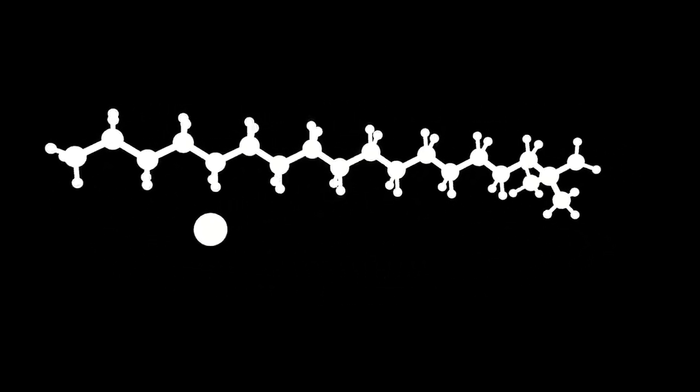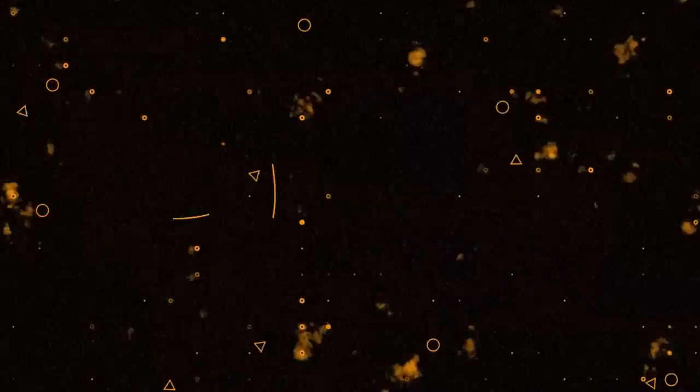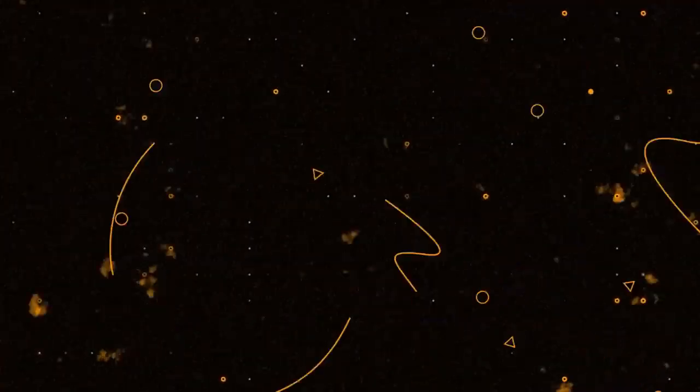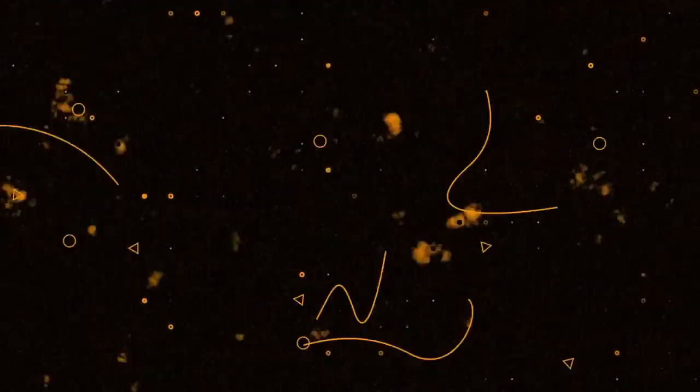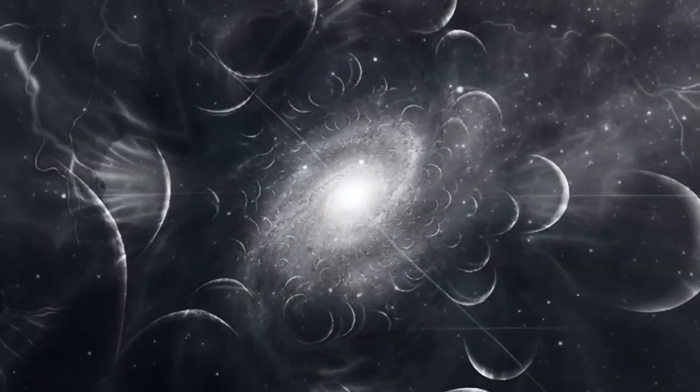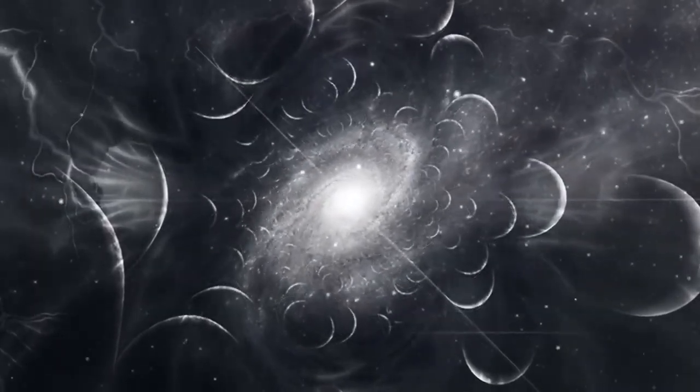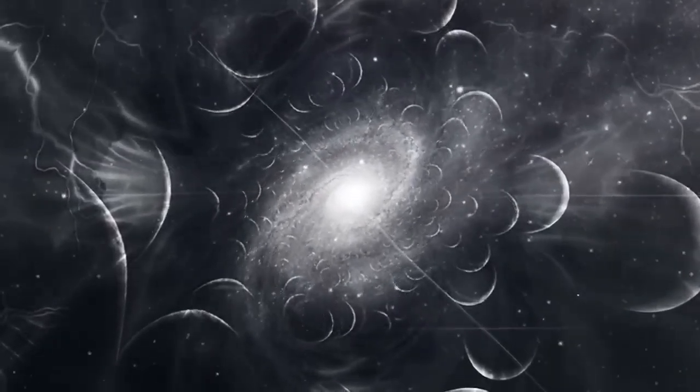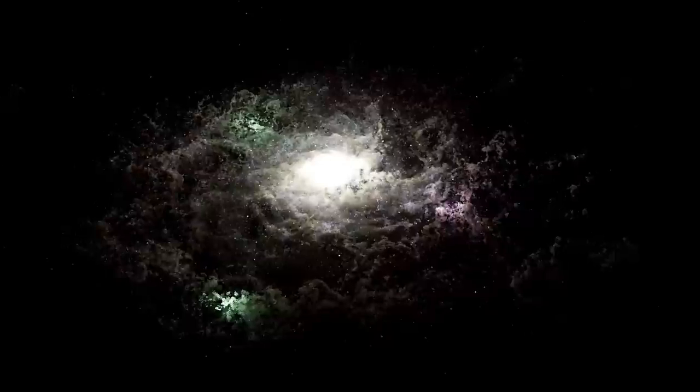Another game-changing revelation came not from what black holes emit, but from what may invisibly surround them. In a pioneering study by the Education University of Hong Kong, astronomers discovered the first indirect evidence that black holes might be cloaked in dark matter, the elusive substance thought to make up roughly 85% of the universe's total mass. By monitoring binary star systems orbiting black holes, researchers noticed an incredibly subtle slowdown in the stars' orbits, about one millisecond per year.